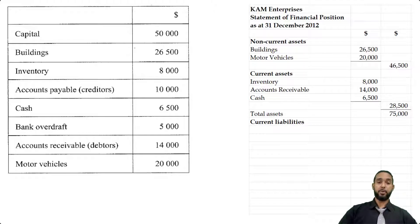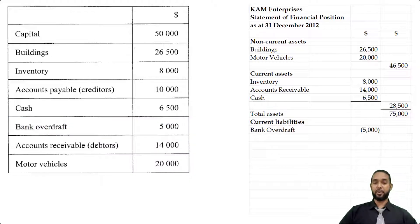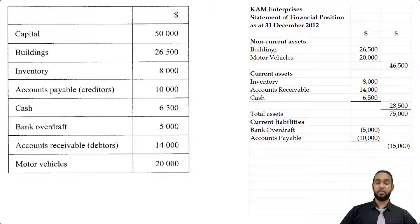Now we only have current liabilities. We had accounts payable or creditors of 10,000 and the bank overdraft of 5,000. There were no non-current liabilities, so we don't have to worry about those. Bank overdraft is 5, accounts payable is 10, giving us a total for liabilities of 15,000.